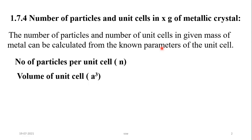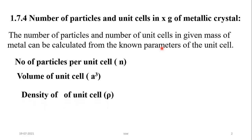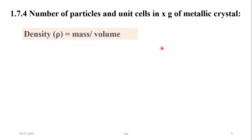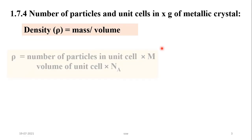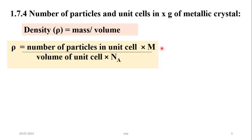That is A cubed. In previous lectures we have studied the relation between density of a unit cell and molar mass of the unit cell. So let us see what that relation is. Density is equal to mass divided by volume — that means number of particles in a unit cell multiplied by M, the molar mass, divided by volume of the unit cell into N_A, that is Avogadro's number.